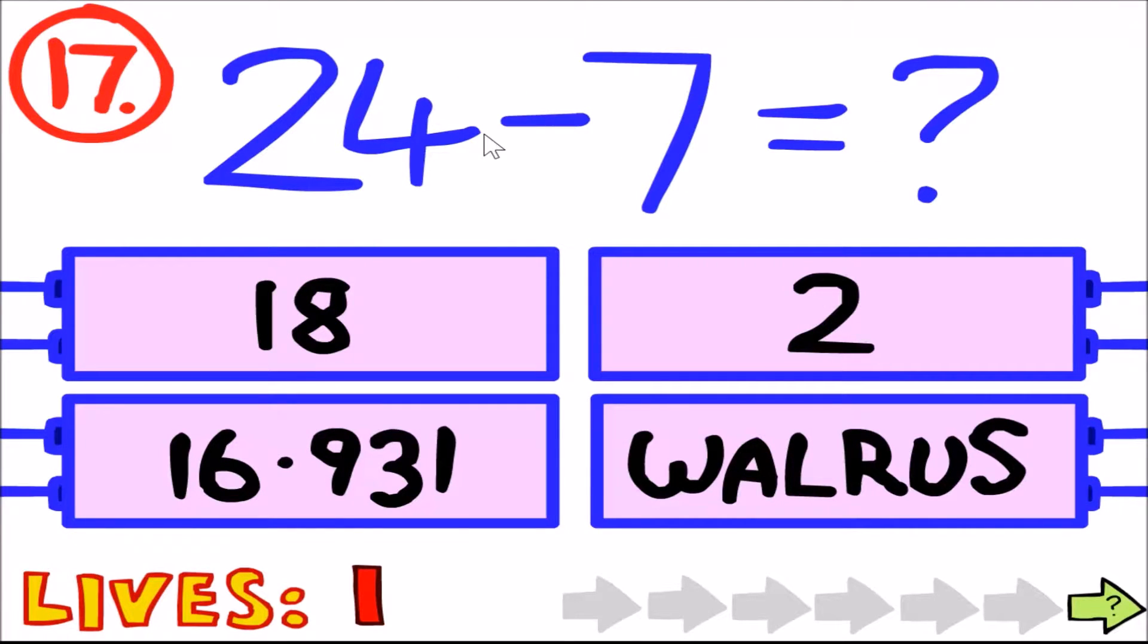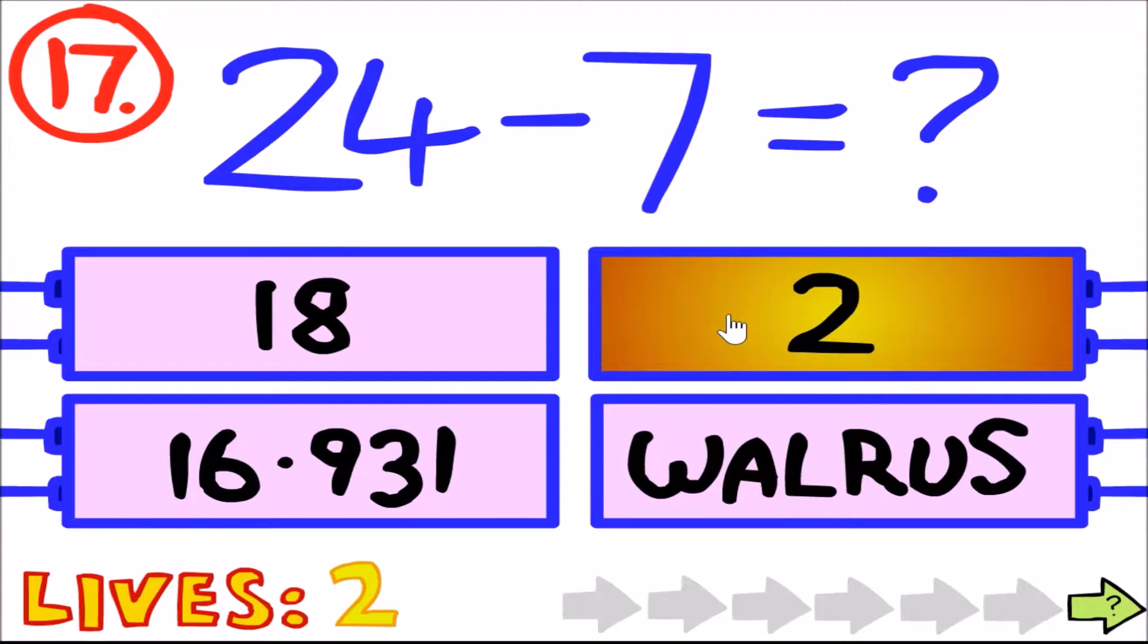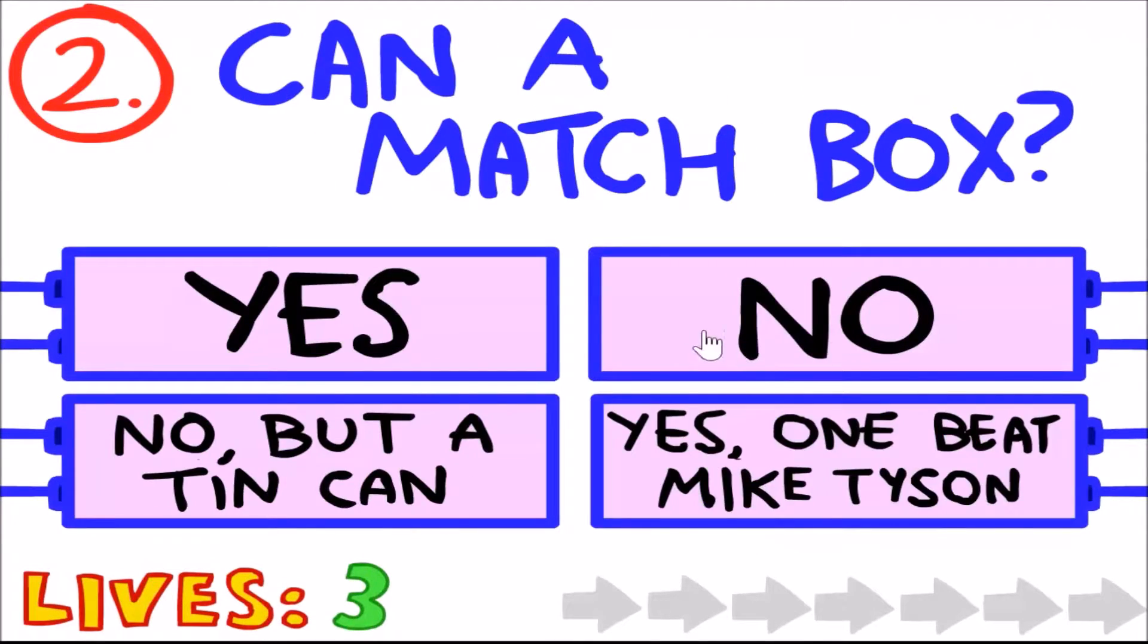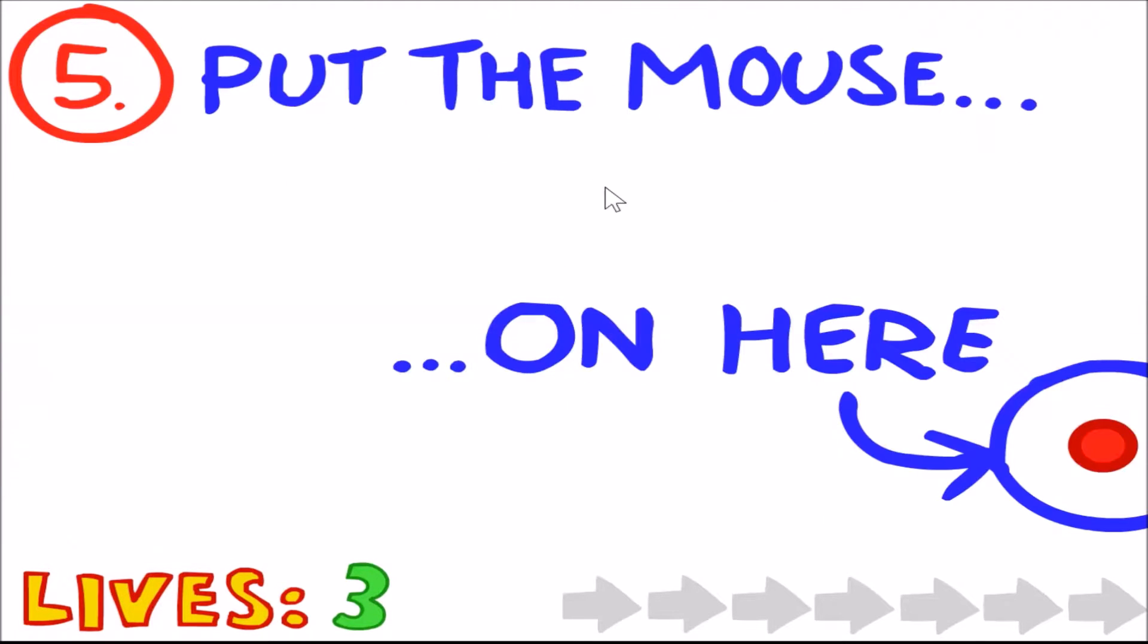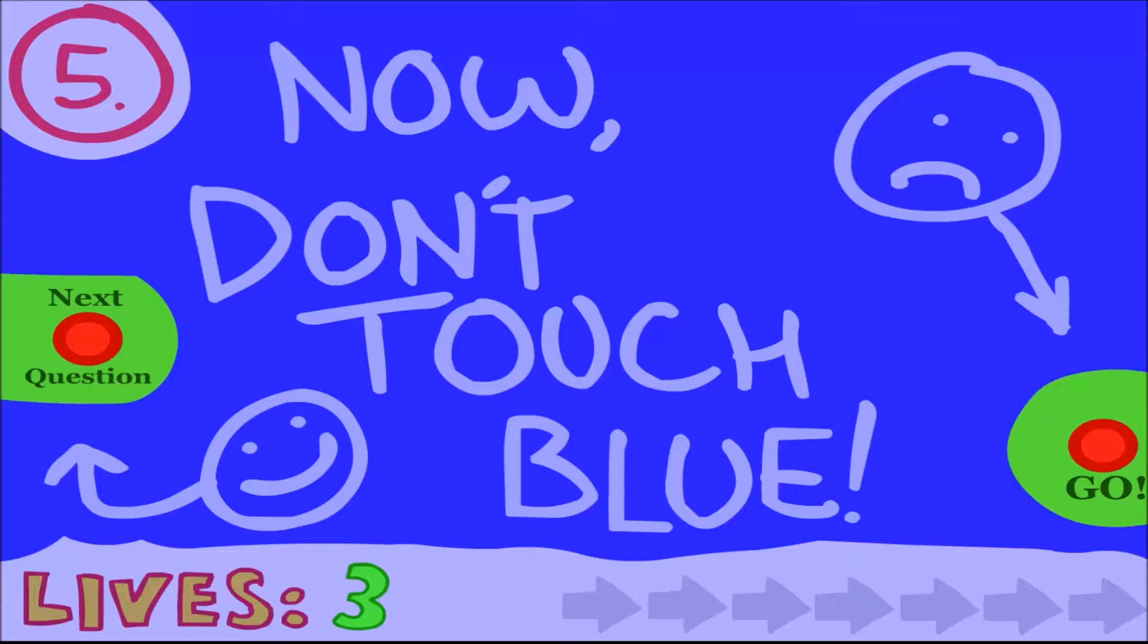24 minus 7, it's my, well, if we're gonna round this one, but oh come on, okay. Walrus. So, 17. I have one life left because when I was getting here I hit the green part where it said don't touch the green. Don't even worry about it. What? So it's 2? This game, I swear to god.